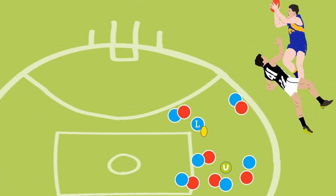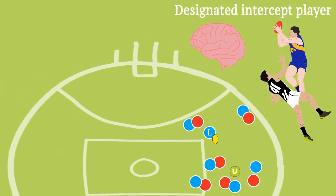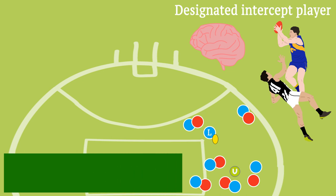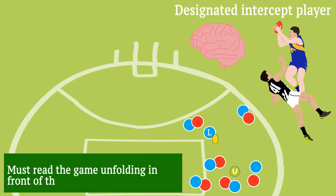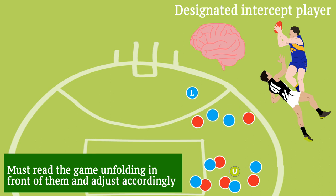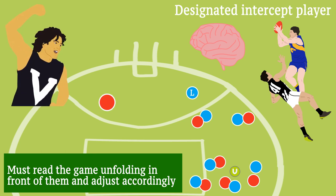This position requires incredible football intelligence to play effectively, as the intercept player must read the game unfolding in front of them and accordingly adjust their position. The loose man may opt to sit deep in the opposition defence, allowing them to effectively coordinate the team's defensive structure. Alternatively, if the opposition team has a dominant key forward, the loose man might play particularly close to them, creating a two-on-one situation where one defender engages contact or the loose man comes across the front or over the top.